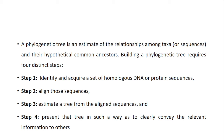For phylogenetic analysis, mainly three methods are available. The first is maximum parsimony, the second is the distance-based method — which includes UPGMA or NJ method — and the third is maximum likelihood. Students and researchers often have confusion about which algorithm to select.